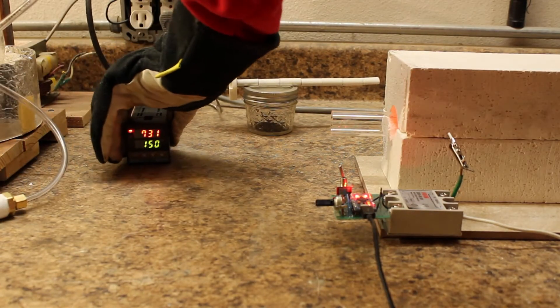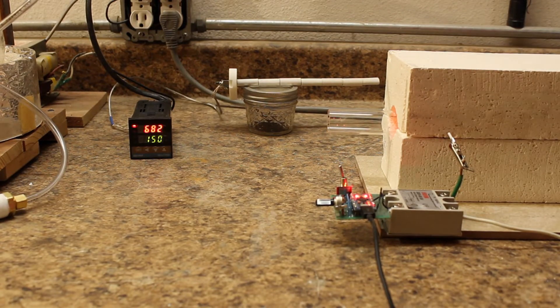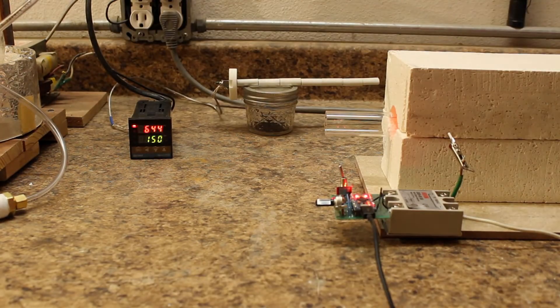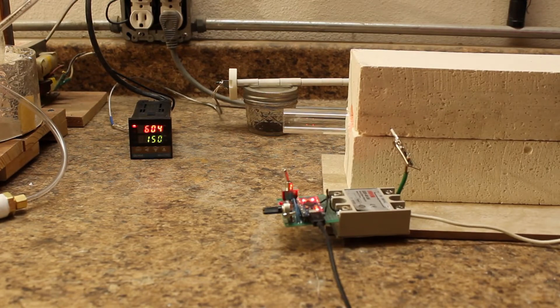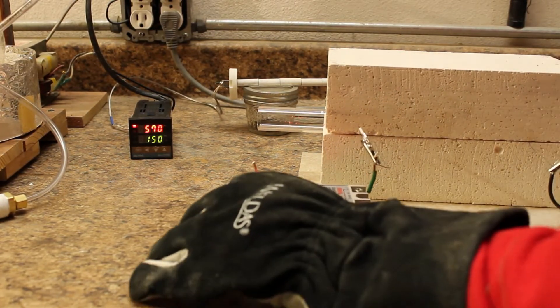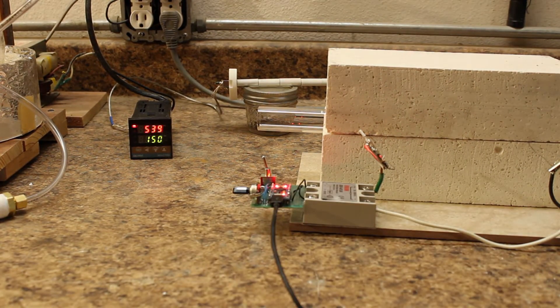The control circuitry is an Arduino connected to a solid state relay with some code that turns the furnace on and off. This heats it up slowly over the course of two hours to a max temperature of 900 degrees Celsius.